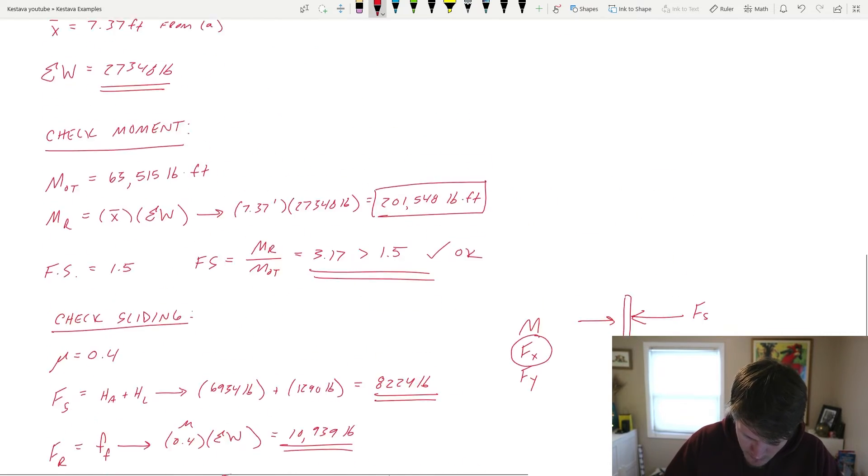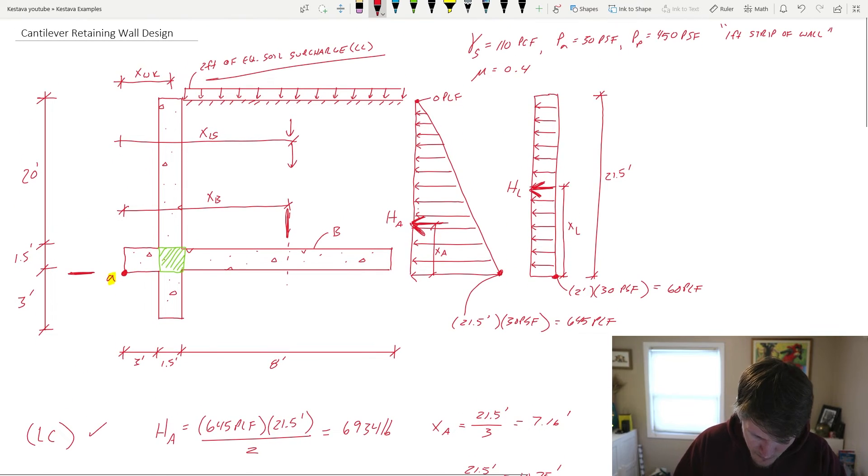So additionally, I'm going to scroll up top here. While we just used the friction to resist sliding effects, we also have this key down here. And this is going to be known as a shear key.